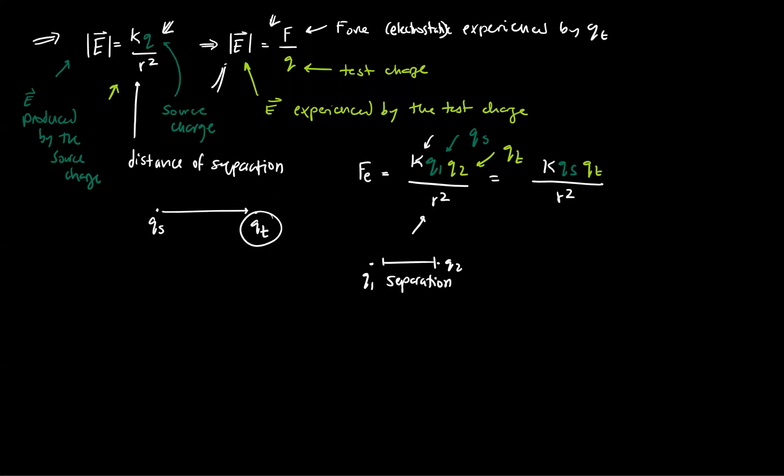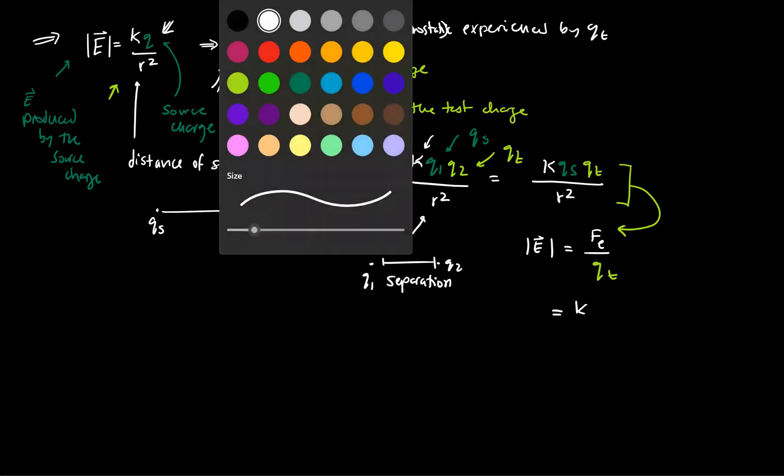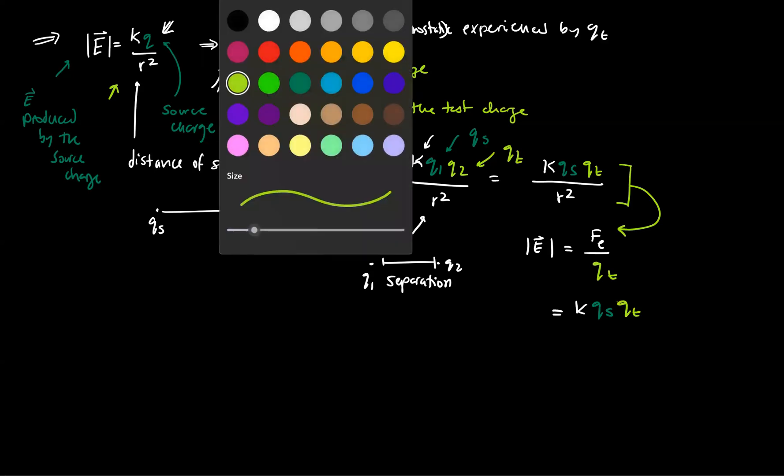And then this equation up here that we had before says that the electric field is equal to the force, the electrostatic force divided by the magnitude of the test charge. So we can basically take this expression that we just created for the electrostatic force and substitute it into this other equation. And what we end up with is k times the source charge qs times the test charge qt divided by r squared times qt. I got that literally just by taking this expression here and substituting it into the other formula. And now you'll notice that the test charge cancels.